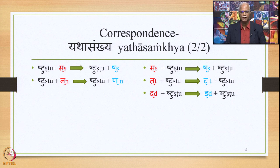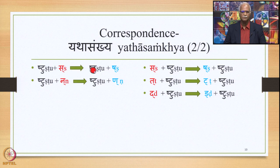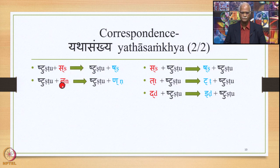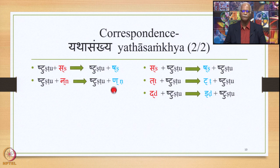The Yathasankhya relationship can be shown in the form of an equation. If we have S followed by Sh in the Samhita mode, this S will be replaced by Sh in the left-hand side environment of Shtu. Similarly, if we have Shtu plus Na, Na occurs at the fifth position in the Tavarga, and so Na will be replaced by the fifth consonant in the set of the Adesha, namely Na. This is how the Yathasankhya principle will work.